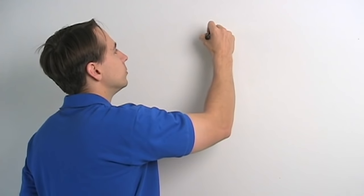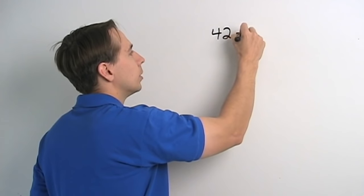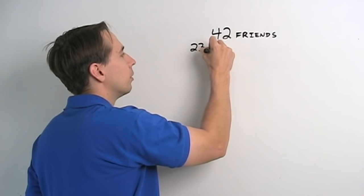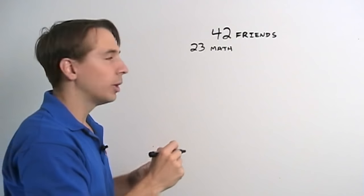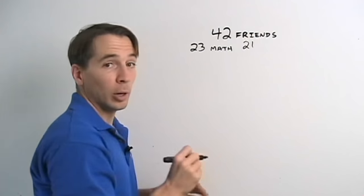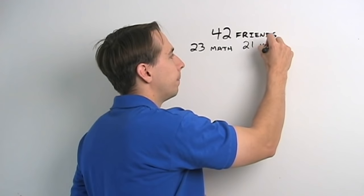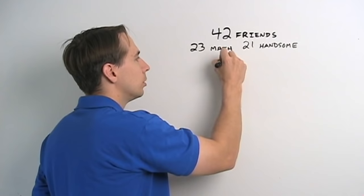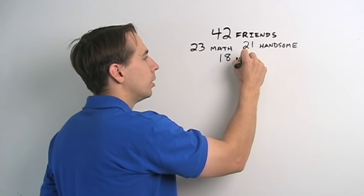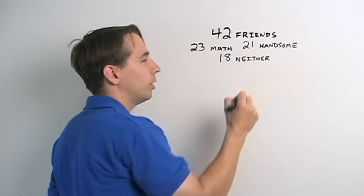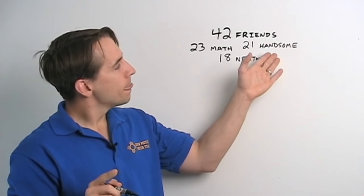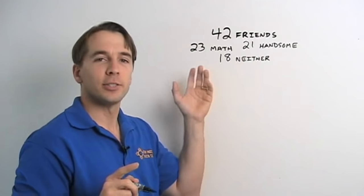And what I told him was, I've got 42 friends. Forty-two friends. And of these 42 friends, 23 know math. And also of my 42 friends, 21 of them are very good looking, dashingly handsome people. Meanwhile, 18 of my friends, well, unfortunately, they don't know math. And they're not very good looking because, well, let's be honest. How good looking can you be if you don't know math? And here's the question. I wanted to figure out how many of my dashingly handsome friends also know math.